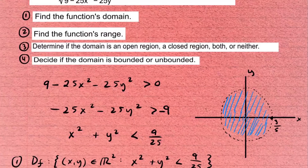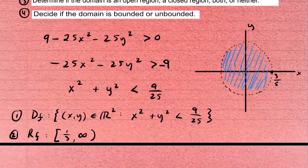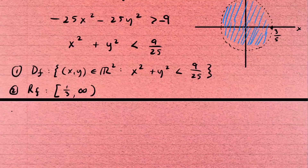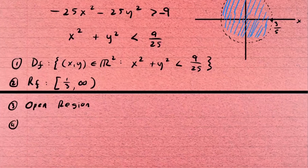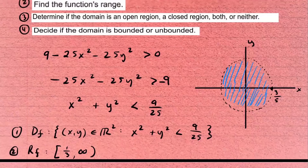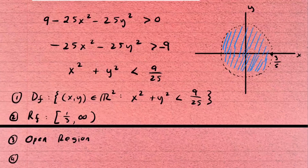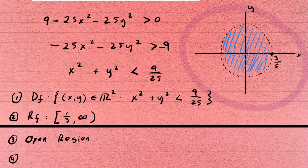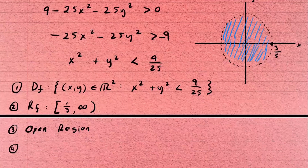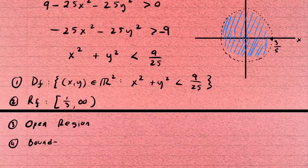For part three, since the boundary points are not included in the domain, this is an open region — it is the interior of the disk without its boundary. For part four, by definition a region is bounded if it lies inside a disk of finite radius. Our region fits inside such a disk, so it is a bounded region.